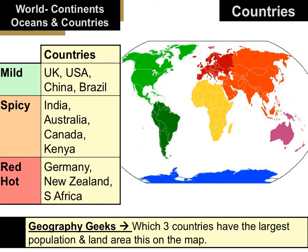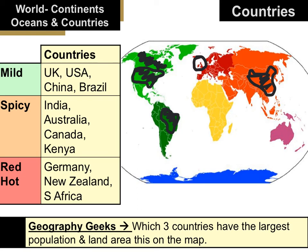Let's look at some of the main countries on the map — we've chosen these at random as the ones you might be most familiar with. We start with the UK, then the USA, then China, Brazil, Canada, Kenya, Germany, New Zealand, South Africa, and of course India. You might need to zoom in a little bit to see those, or do your own research — they're all pretty easy to find.